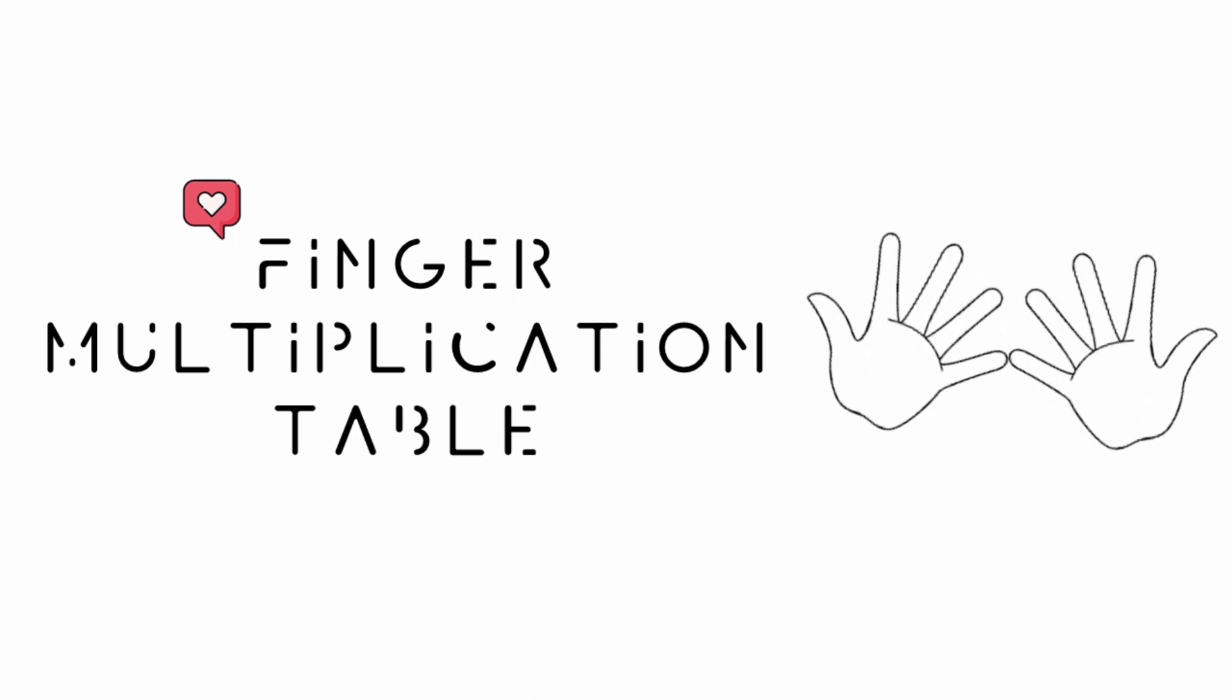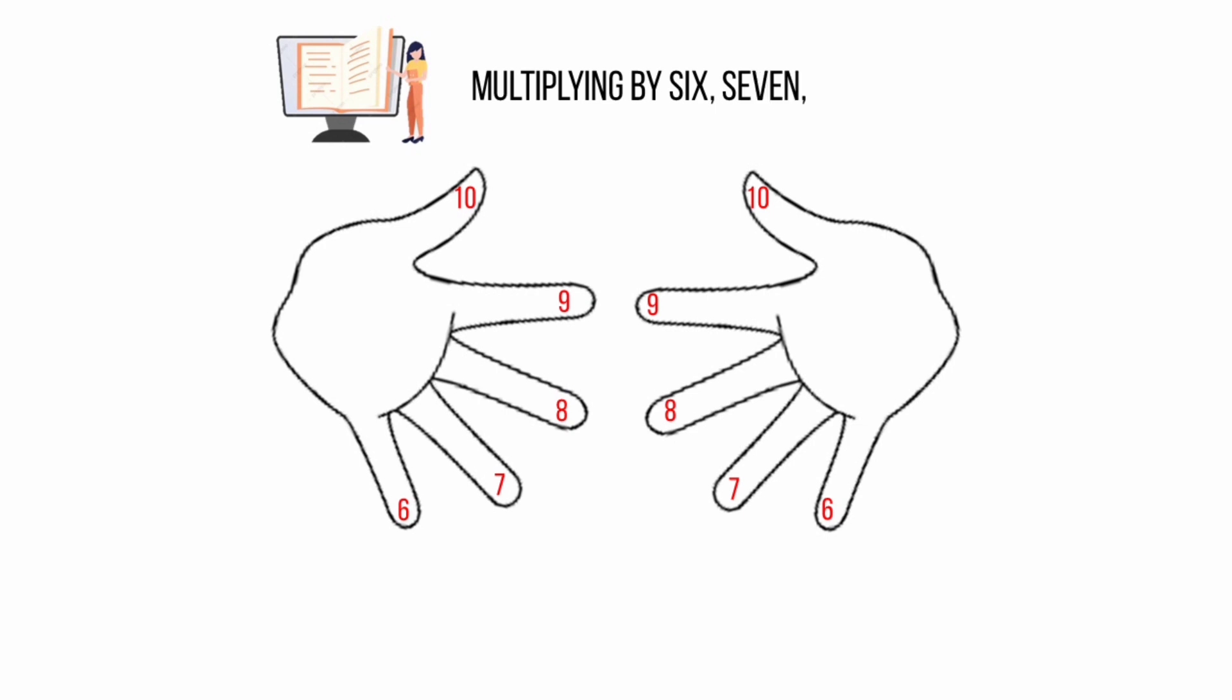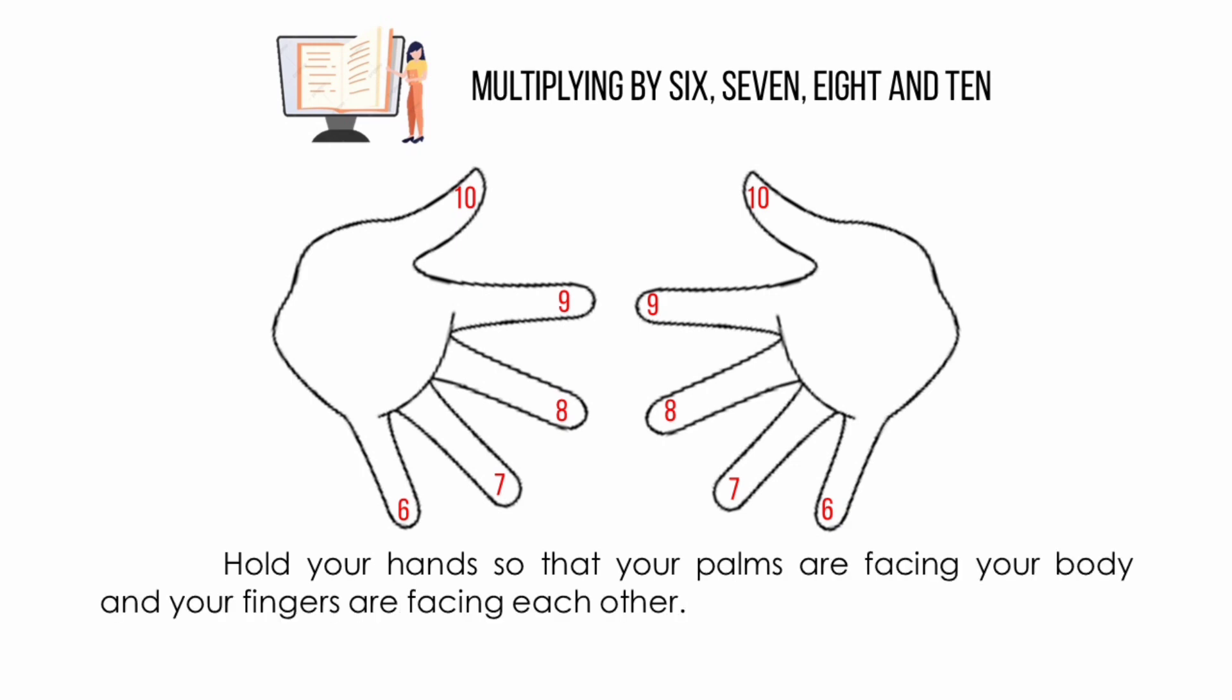Finger multiplication table. Hold your hands so that your palms are facing your body and your fingers are facing each other. Again, each finger will represent a number. Your pinkies represent the number 6, your ring fingers represent 7, your middle fingers represent 8, your index fingers represent 9, and your thumbs represent the number 10.